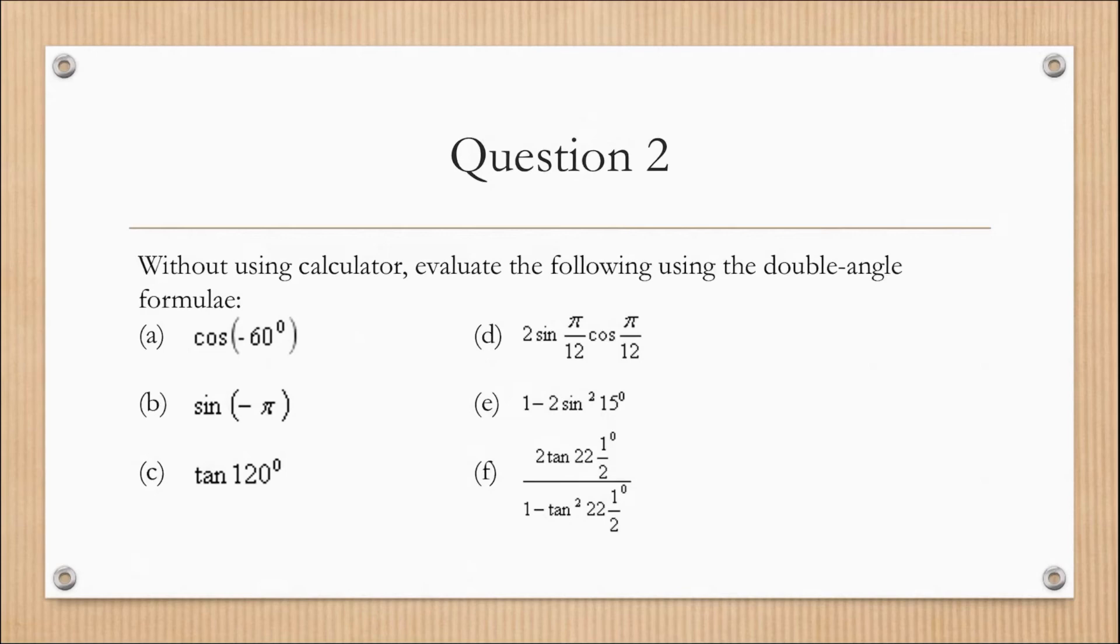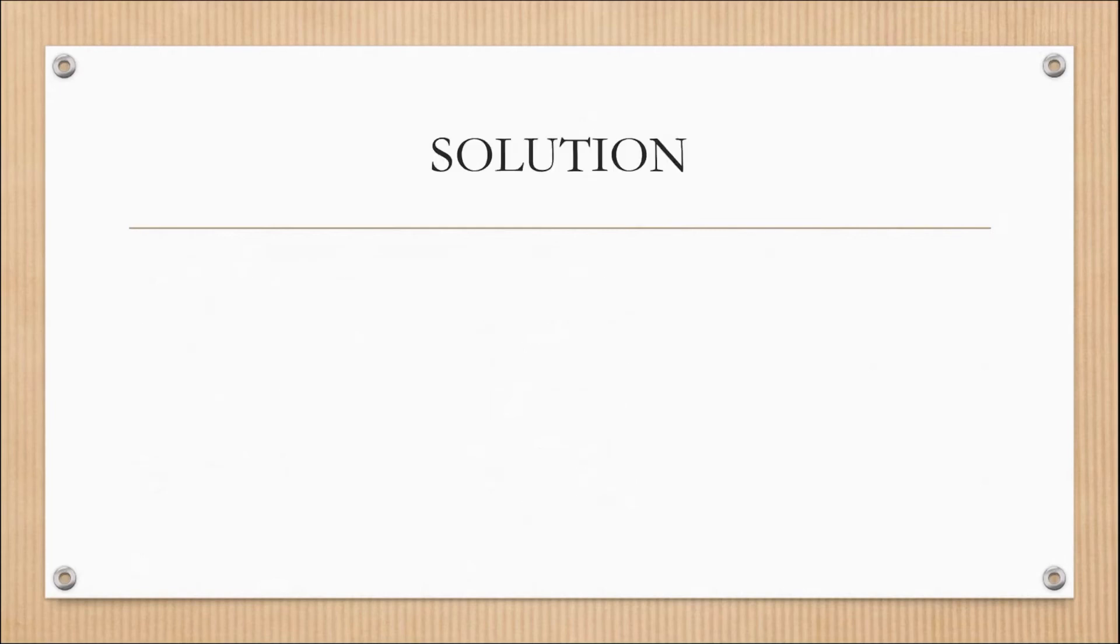Okay, so let's continue with question 2. Without using calculator, evaluate the following using double angle formula. So A: cos(-60°). So using double angle formula cos(2A), we have 3 formulas for cos(2A).